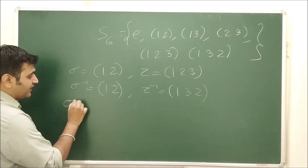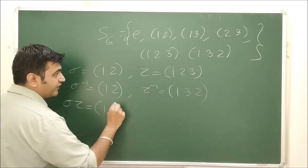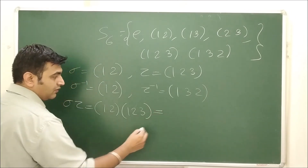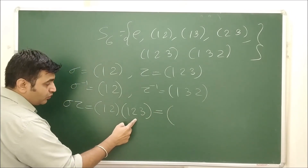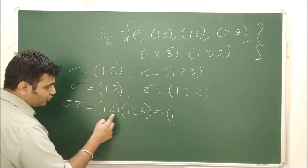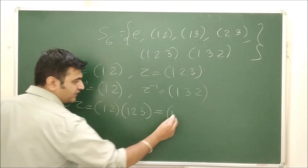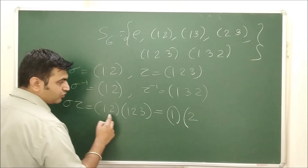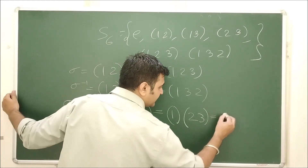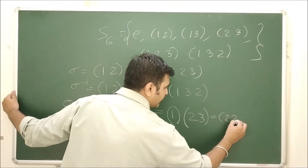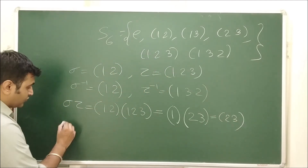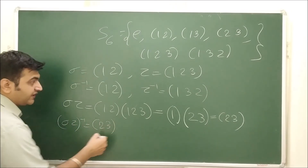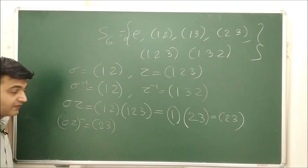What is σ∘τ, the composition of (1 2) with (1 2 3)? Applying τ first: 1→2, then σ: 2→1. Next: 2→3, then σ: 3→3. Next: 3→1, then σ: 1→2. So σ∘τ = (1)(2 3) which is just the transposition (2 3). Therefore (σ∘τ)⁻¹ = (2 3).